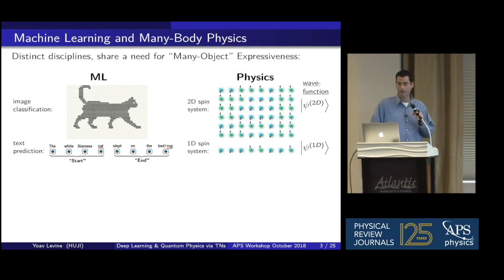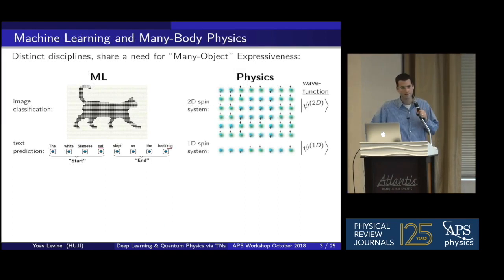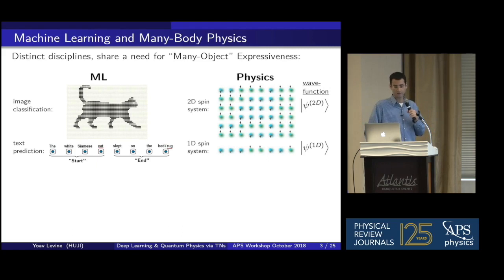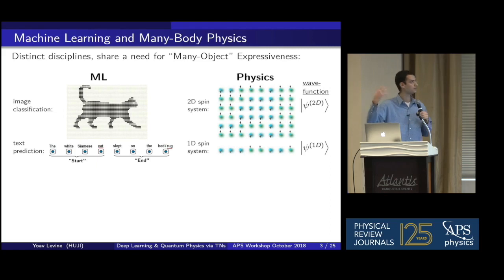As a starting point or motivation, I want to point out that though these are two distinct scientific disciplines, they share a common need for what we call many-object expressiveness. In the deep learning domain, an image of a cat is comprised of many pixels, and the deep learning algorithm needs to model convoluted dependencies between these pixels. Similarly, in sequential tasks such as predicting the next word in a sentence, the recurrent network needs to integrate the words seen so far.